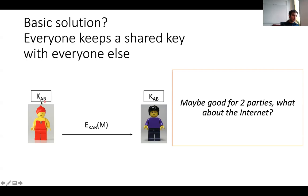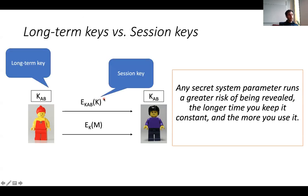This trivial solution also suffers from another problem: Alice and Bob only have one key they use with each other. There is a basic principle in cryptography — highlighted in bold in the book — which states that any secret system parameter runs a greater risk of being revealed the longer you keep it constant and the more you use it. In other words, if you keep using the same key over and over again, the probability that the adversary will learn this key grows.